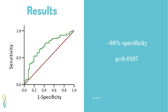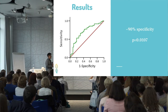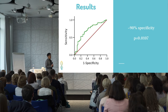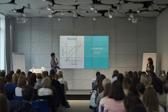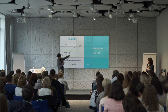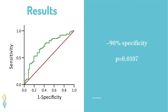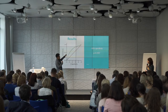We managed to predict with 90% specificity to which group every couple belongs. Here is an illustration: the red line is a random classifier and the green line is our classifier — whatever is above the red line is a better classifier.